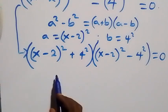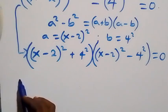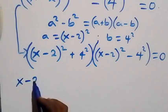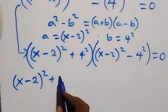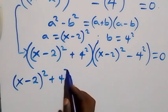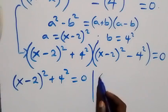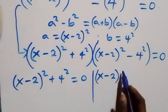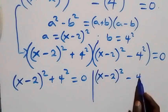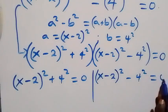From here, this implies we have two possible cases. The first one: x minus 2 all squared plus 4 squared equals to zero. Or we have x minus 2 all squared minus 4 squared equals to zero.